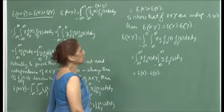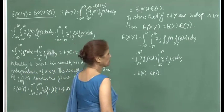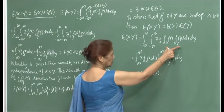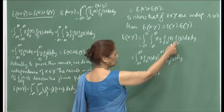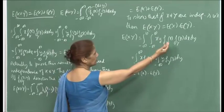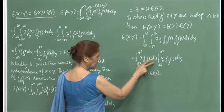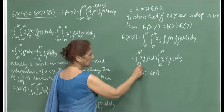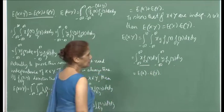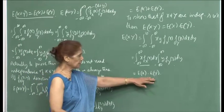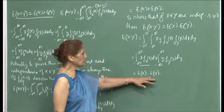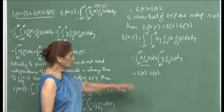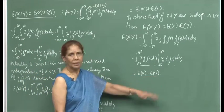Under independence, we additionally have E[xy] = E[x]·E[y]. This is shown by writing E[xy] = ∫∫xy·f_X(x)·f_Y(y)dx dy, which separates into (∫x·f_X(x)dx)·(∫y·f_Y(y)dy) = E[x]·E[y]. This result requires independence and will be used to prove that Var(x + y) = Var(x) + Var(y) under independence.